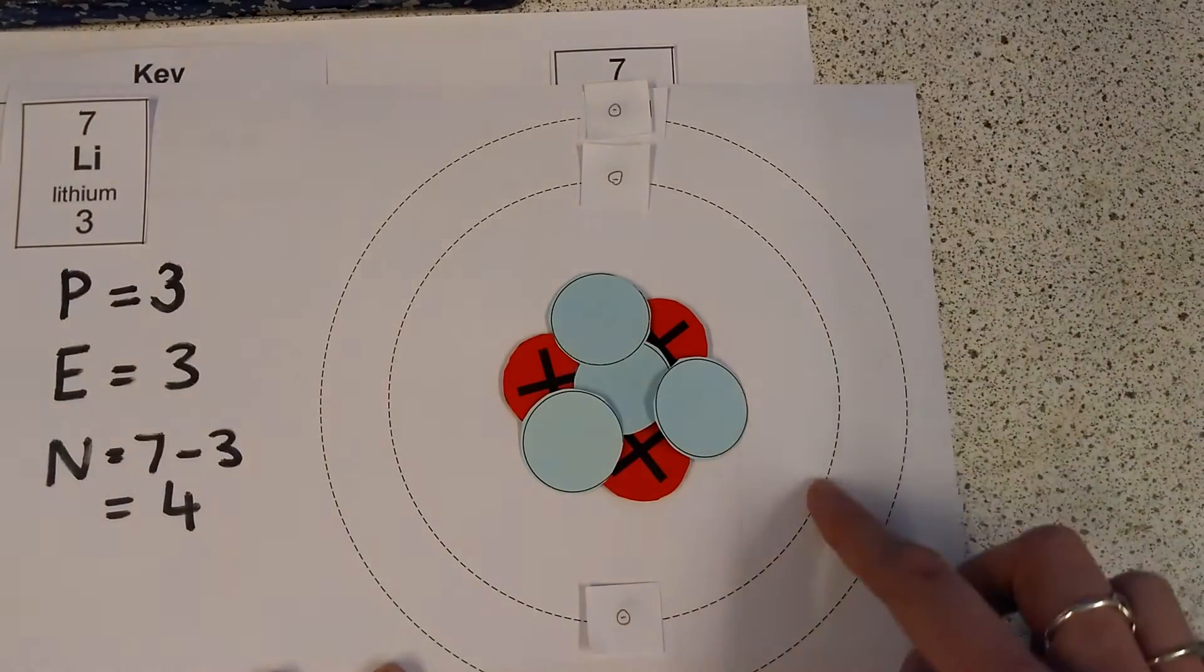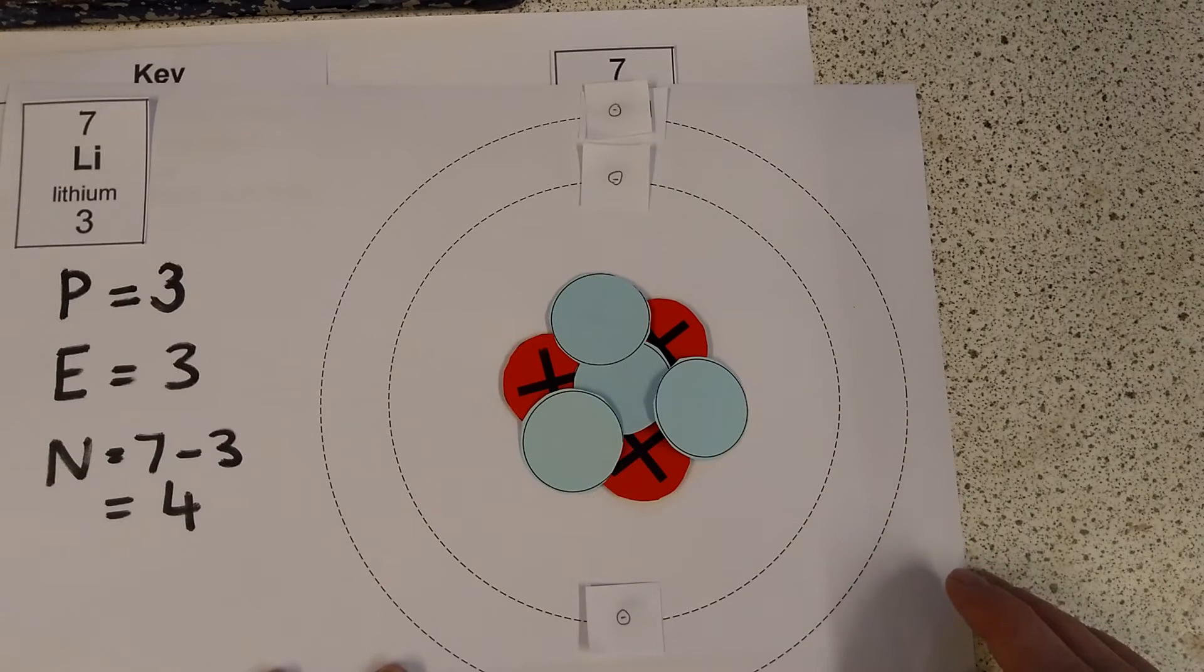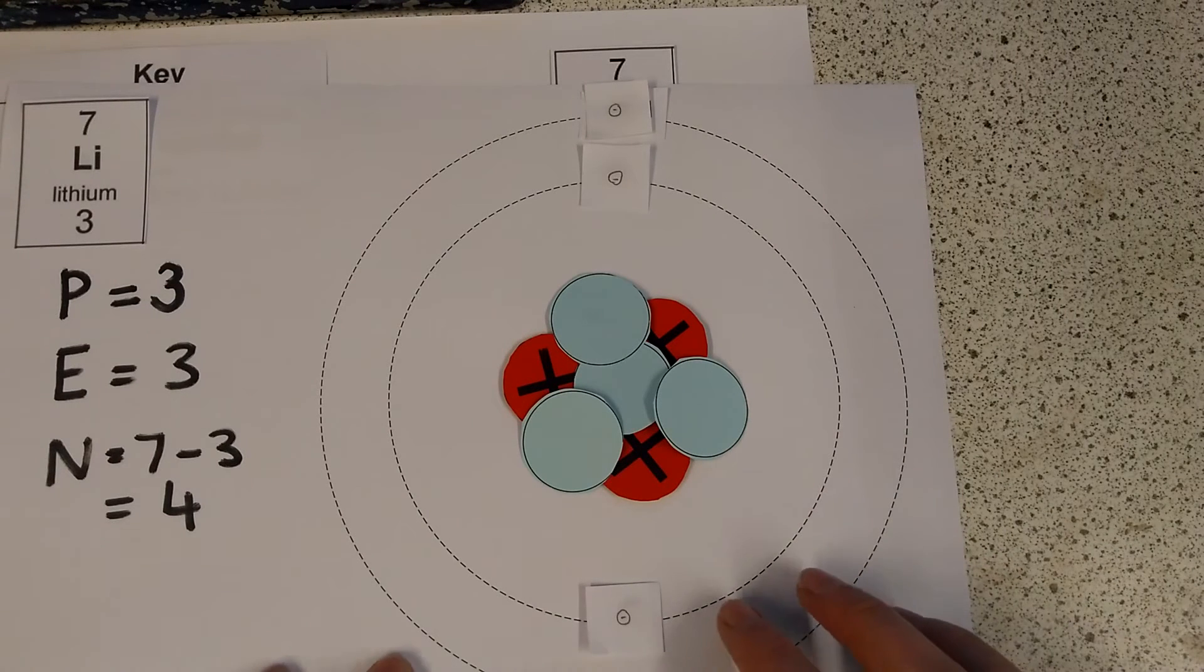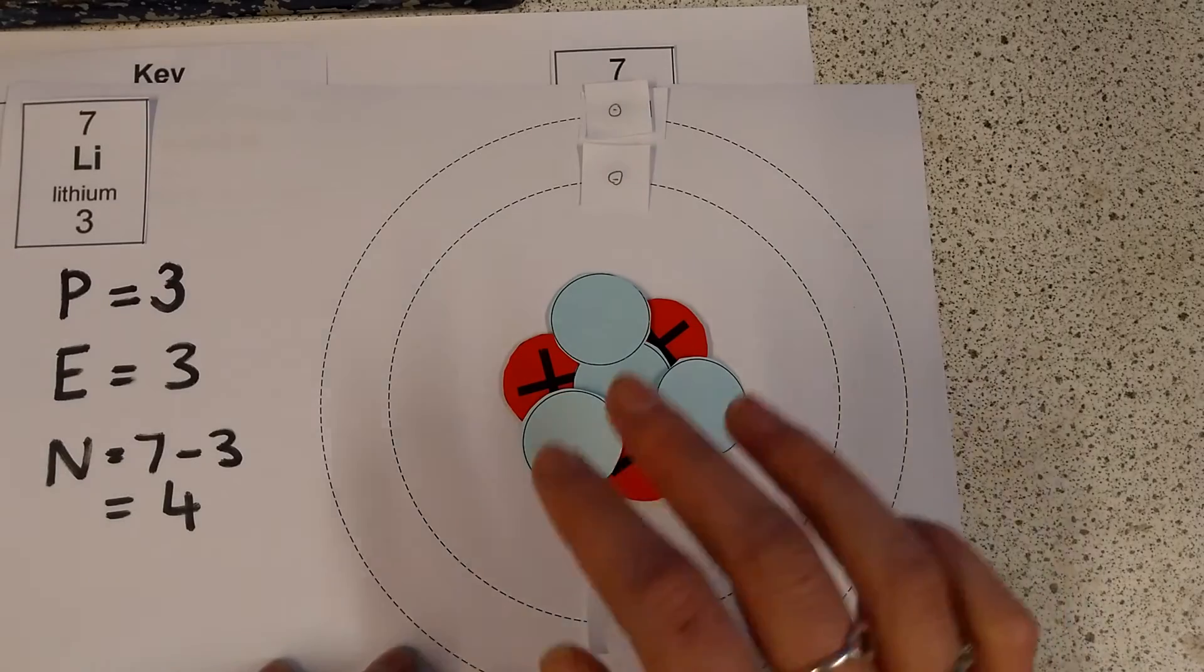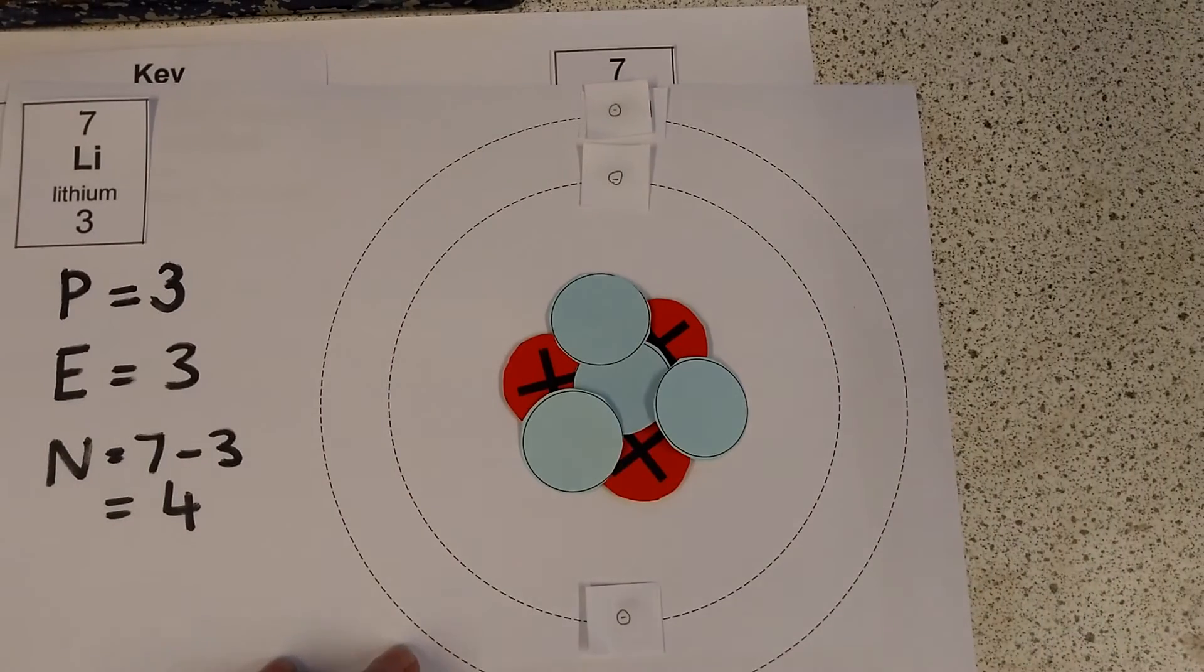This shell, which you might also hear called an orbit or an energy level, it's not a physical thing inside the atom in the way that the protons and the neutrons and the electrons are. It's not made of matter. It's just an imaginary line that tells us where we can expect to find those electrons.